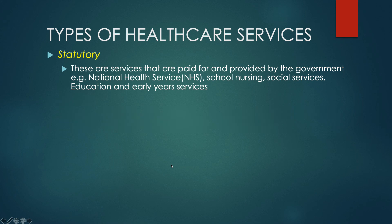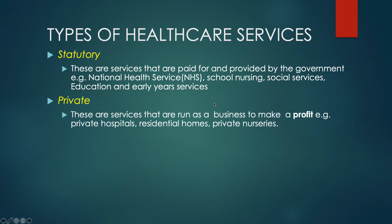Statutory services are paid for and provided by the government — for instance, our National Health Service. You're entitled to them because they were already paid for through your tax-paying. Things like school nursing, social services, education, early years services — other examples are the police and fire services. These are all statutory services that we are entitled to as citizens or residents of the United Kingdom.